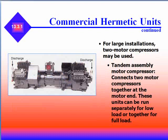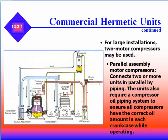For large installations, two motor compressors may be used. Tandem assembly motor compressors connect two motor compressors together at the motor end, and these units can be run separately for low load or run together for full load. Parallel assembly motor compressors connect two or more units in parallel by piping, and these units also require a compressor oil piping system to ensure all compressors have the correct oil level in each crankcase while operating.